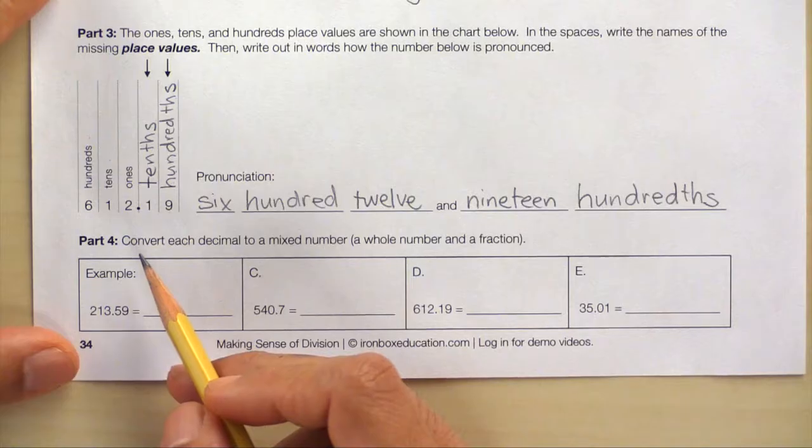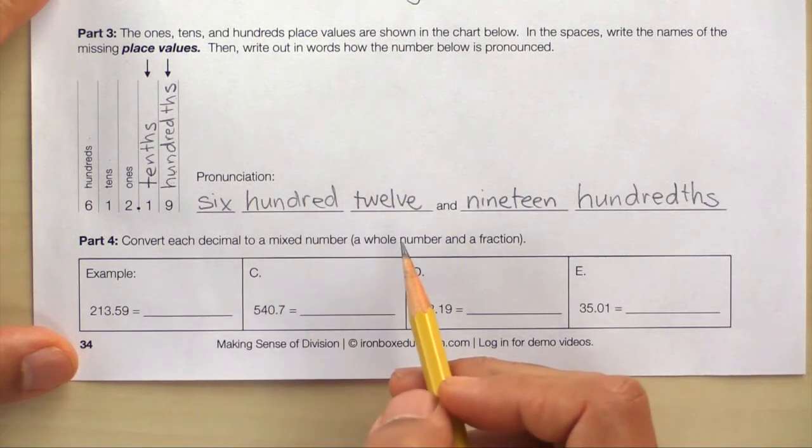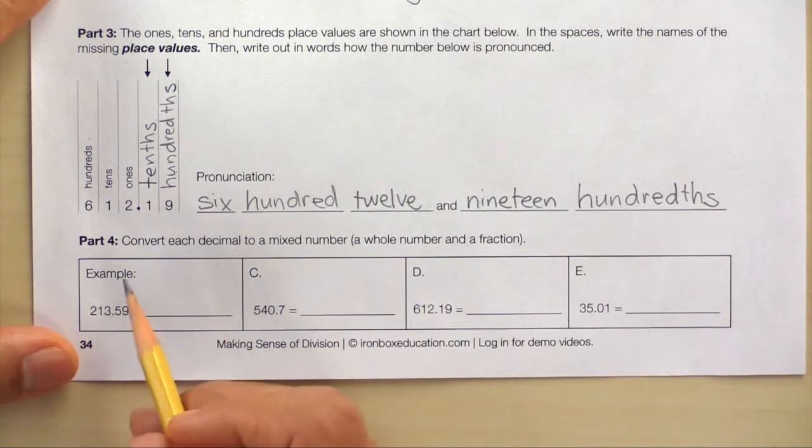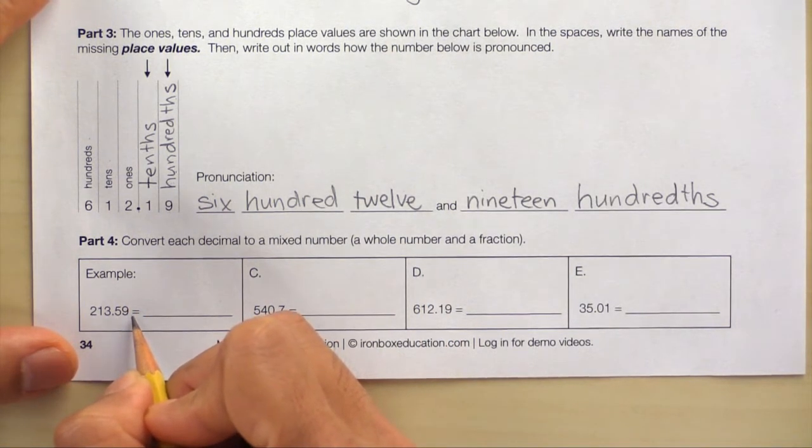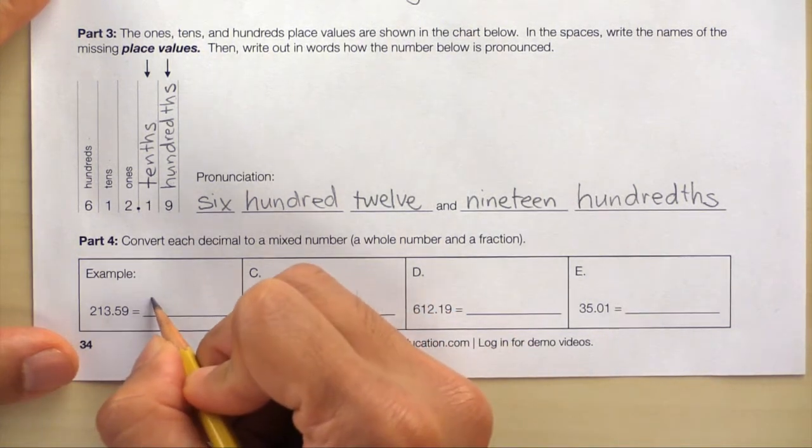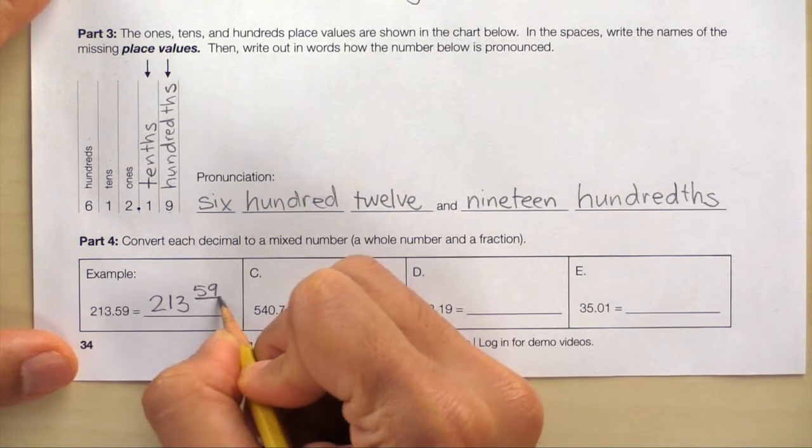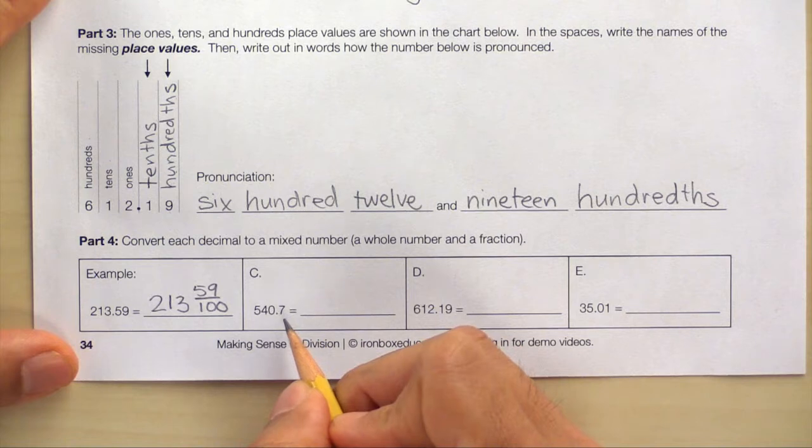Let's finish up with part 4. Convert each decimal to a mixed number. And that will include a whole number and a fraction. Here's the example box. 213 and 59 hundredths can also be written as 213 and 59 hundredths.